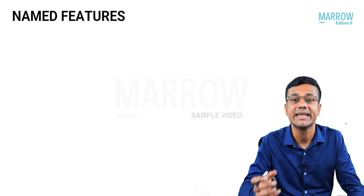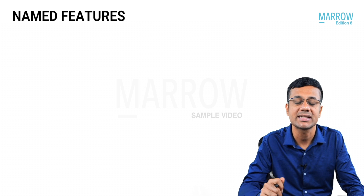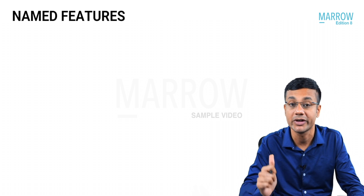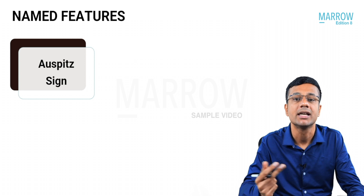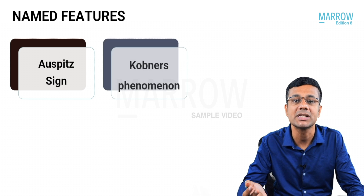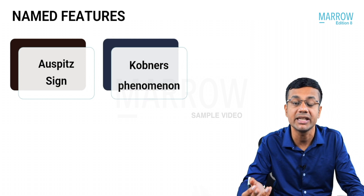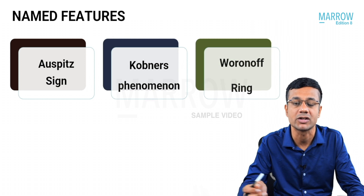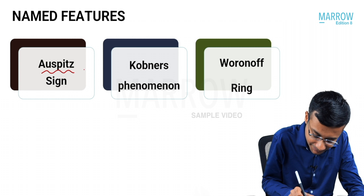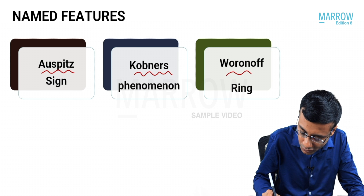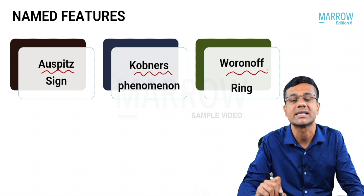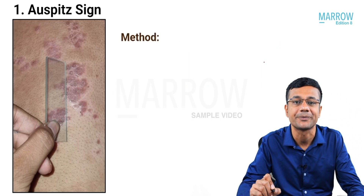Let's now go to the named features in psoriasis — three important ones: Number one, Auspitz sign. Number two, Koebner's phenomenon. Number three, Woronoff's ring. Auspitz, Koebner, and Woronoff are all names of persons.